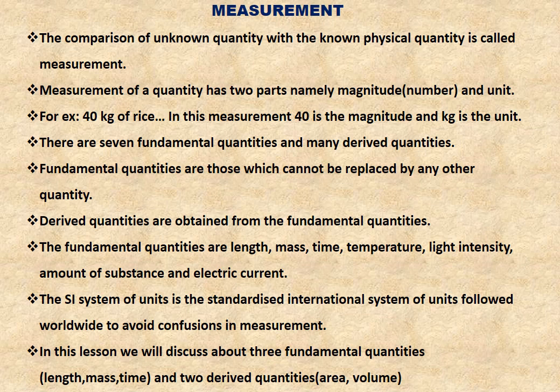There are seven fundamental quantities and many derived quantities. Fundamental quantities are those which cannot be replaced by any other quantity. Derived quantities are obtained from the fundamental quantities.